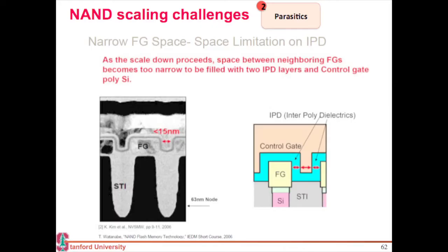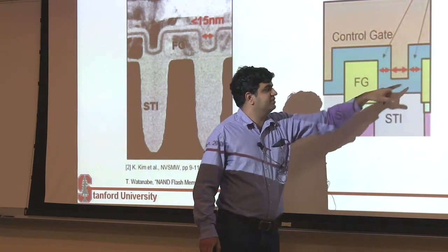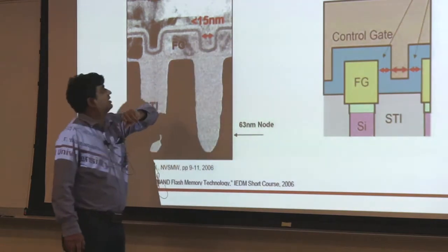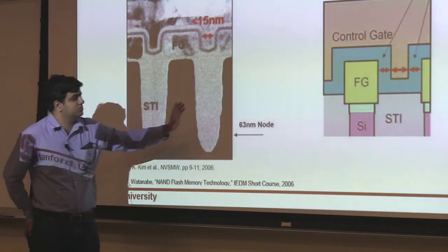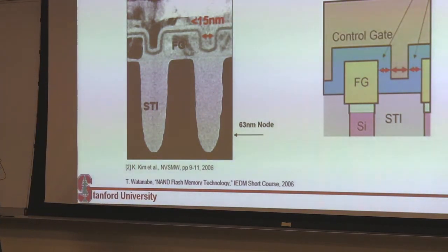That is becoming a problem. Another thing becoming a problem is that since you wrap the word line around to increase your gate coupling ratio, you need a certain thickness to wrap it around. The interpoly dielectric is, let's say, seven or eight nanometers thick, and you have two of these, so you need at least 50 nanometers of spacing between these two lines just to achieve that wrap-around. And if you want to scale your cell below that, it again becomes a problem. So these are all open challenges right now.